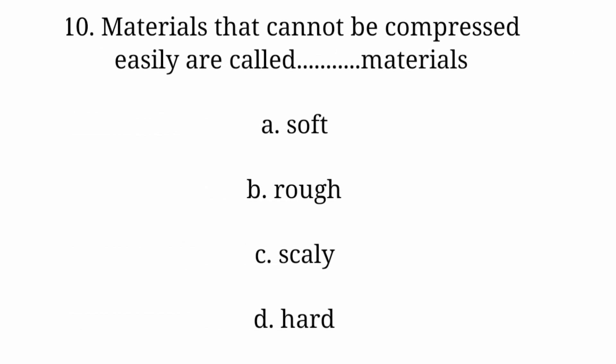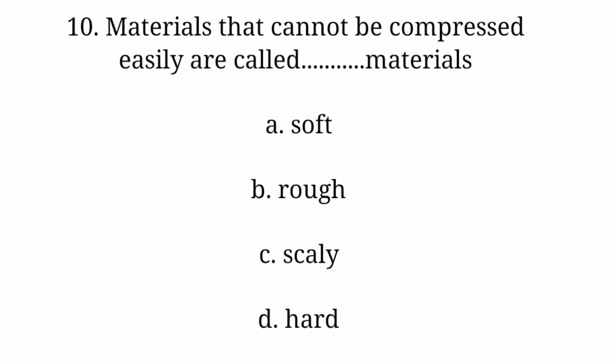Question 10: Materials that cannot be compressed easily are called dash materials. Option A: Soft. Option B: Rough. Option C: Scaly. Option D: Hard. Answer is Option D: Hard.